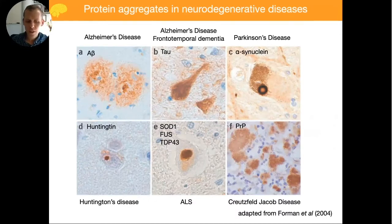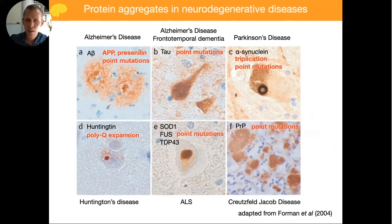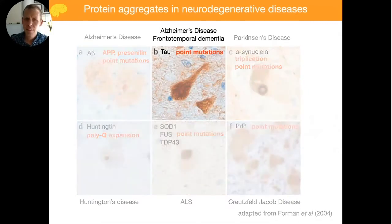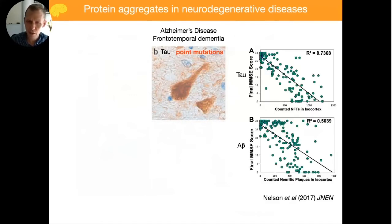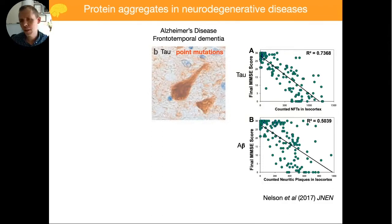One phenotype that's a hallmark of neurodegenerative diseases is that specific proteins aggregate in specific brain cells. The very same proteins that aggregate can also be found mutated in familial cases of disease. One of the proteins our lab focuses on is tau. Tau aggregation is associated with Alzheimer's disease and other dementias, and point mutations also give rise to familial dementia. Tau is one of the two hallmarks of Alzheimer's disease together with A-beta, but tau is actually much better correlated with Alzheimer's symptoms than A-beta is, making it a very attractive target.